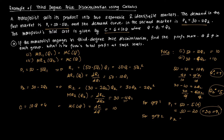For group 2: P2 equals 30 minus 2Q2, which is 30 minus 2 times 5, giving P2 equal to 20.